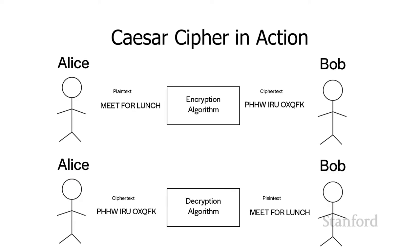Just as a reminder, we have encryption and decryption. Alice is going to start with the plain text 'meet for lunch', she's going to generate the cipher text 'PHHWIRU0XQFK'. And then when Bob receives that cipher text, he's going to have to pass it back through the decryption algorithm in order to understand what Alice is actually trying to tell him.